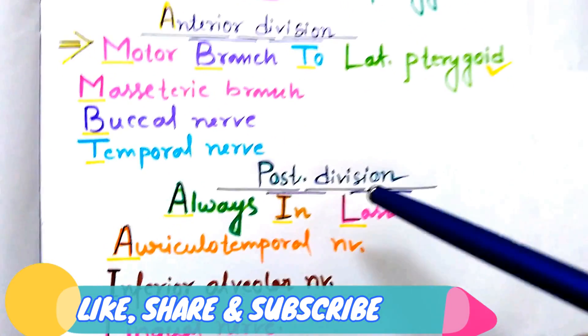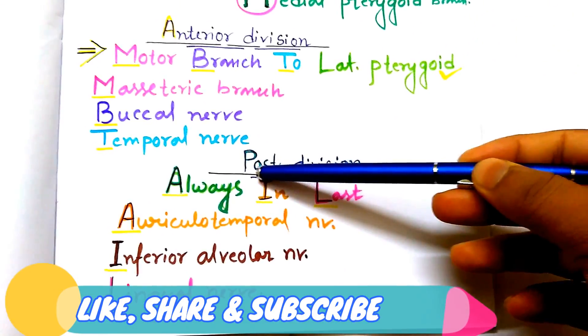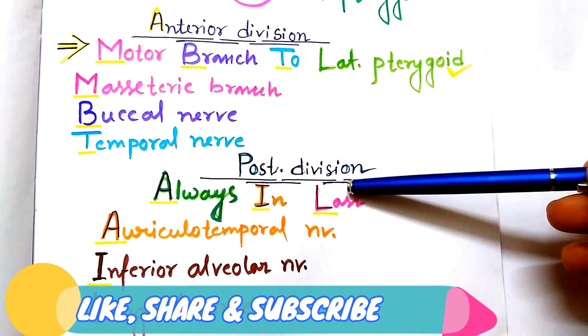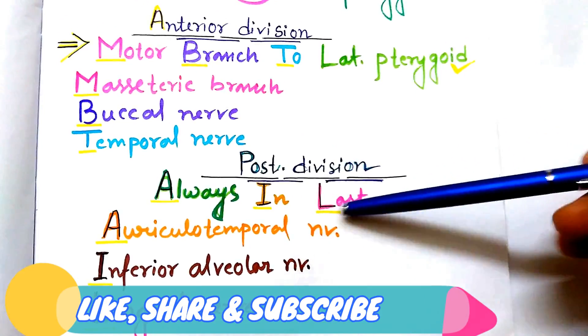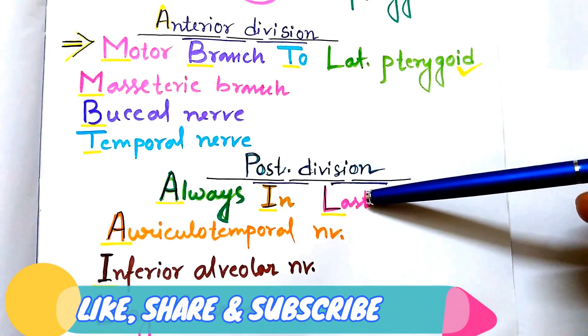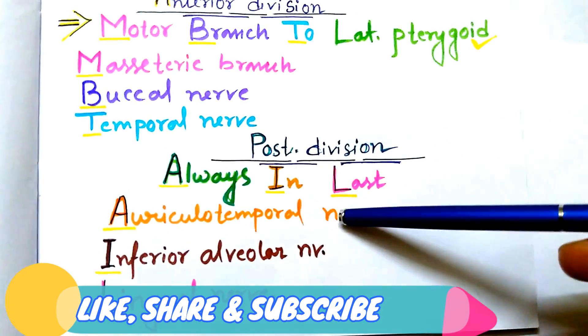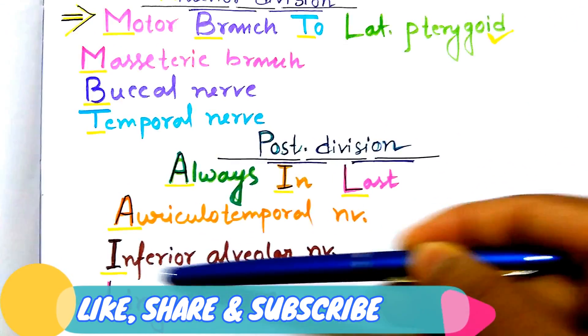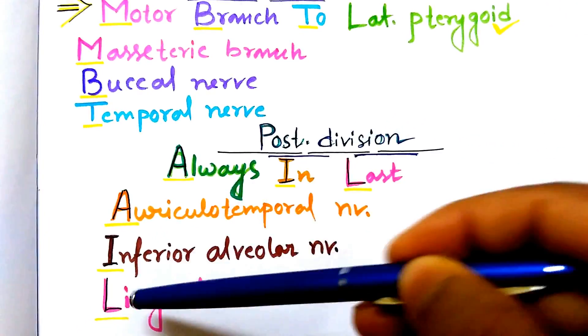Now comes the posterior division. As it is posterior division, we will discuss it last. The term is always in the last. A for auriculotemporal nerve, I for inferior alveolar nerve, and L for lingual nerve.